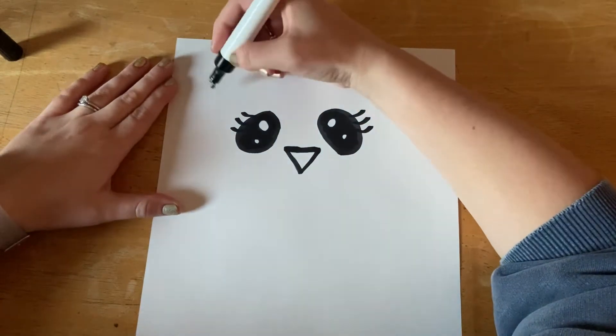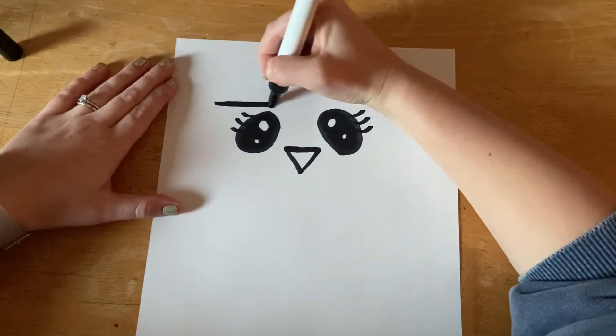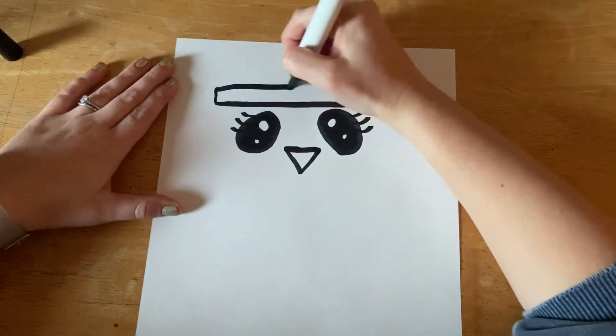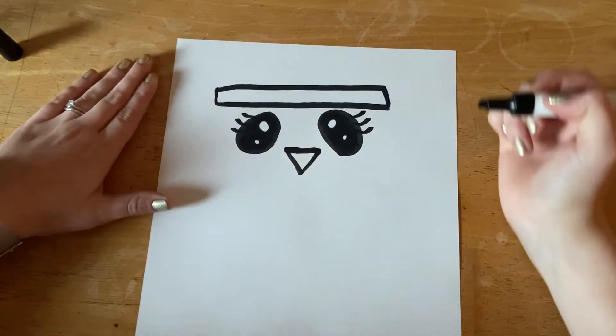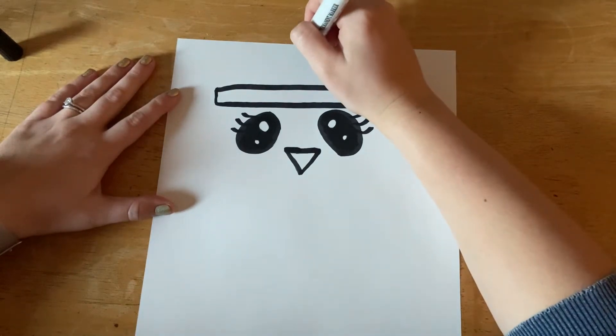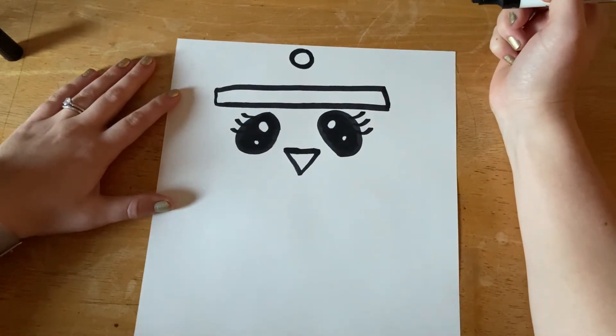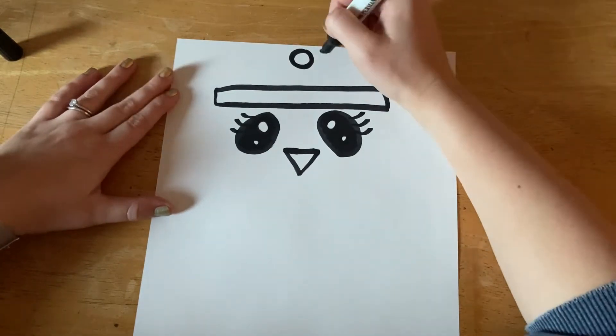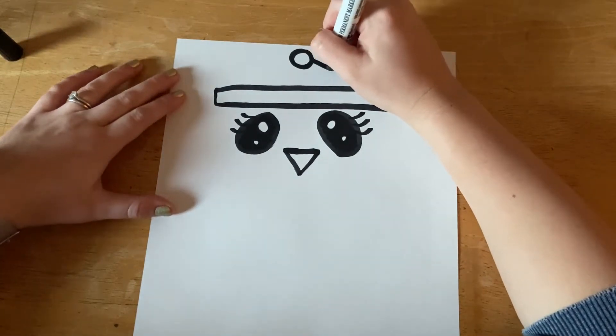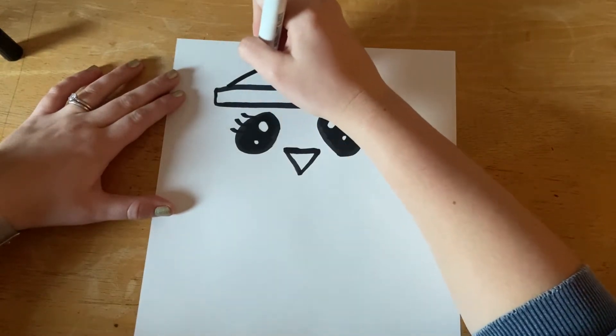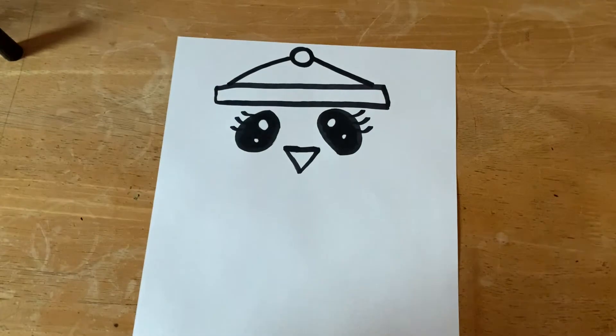Next, right above the eyes we're going to draw a long skinny rectangle. Right above that at the very top you're going to draw a circle. This is going to make our hat, so we're going to connect those two things with diagonal lines. We're just using simple shapes that we already know to make a drawing that's more complicated.